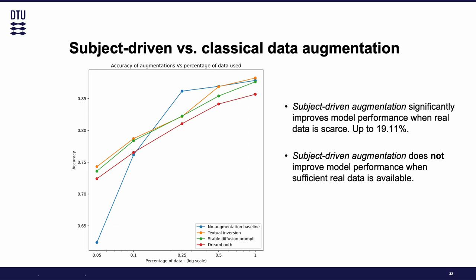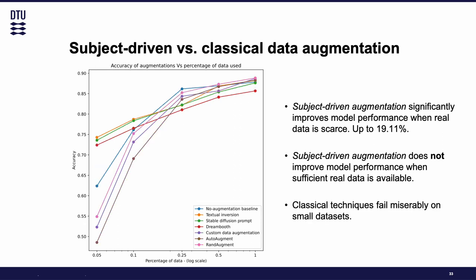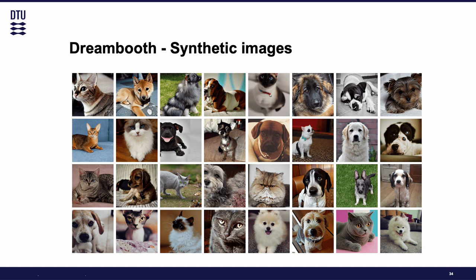Finally, we have the results for Dreambooth. Seeing the complete plot, we realize that subject-driven augmentation with Dreambooth does not improve model performance. In general terms, the images generated by Dreambooth, Textual Inversion, and Stable Diffusion prompt are of very high quality. Nevertheless, some of the pictures have some flaws and artifacts.